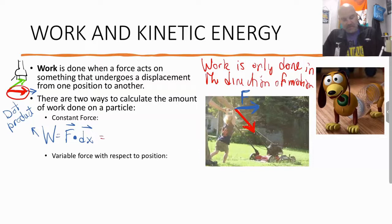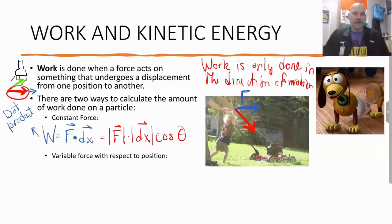So we take the magnitude of the force multiplied by the magnitude of delta x or dx and we multiply it by the cosine of the angle. One thing to note is that if your angle was perpendicular, there is no work. So if you're pushing horizontally and your force is vertical, there's no work being done by that force.